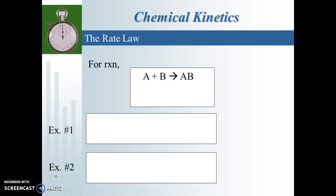We have what's called a rate law. Let's say we have a reaction A plus B equals AB. An example of a rate law might be: rate equals k times the concentration of A to some x power times the concentration of B to some x power. We've seen how the rate depends on concentration, so it shouldn't surprise us to see concentrations in the rate law.